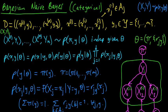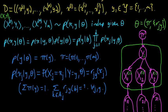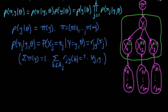We're looking at Bayesian Naive Bayes. We defined our setup for a Naive Bayes model, and now we're ready to go Bayesian. The first thing we need to do is put some priors on these parameters.